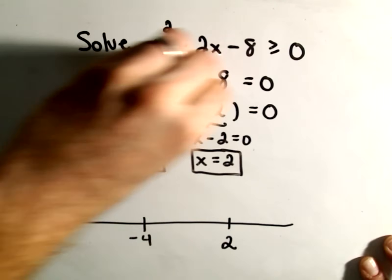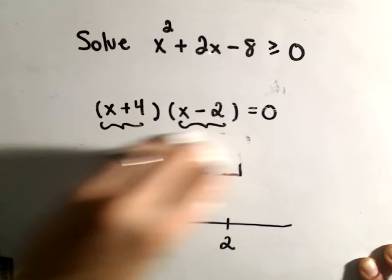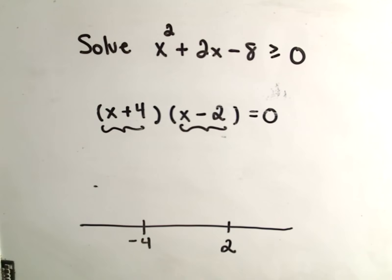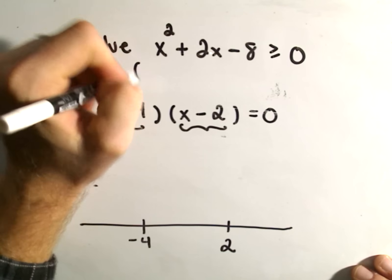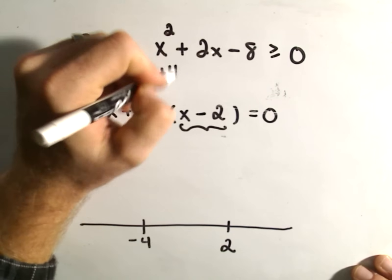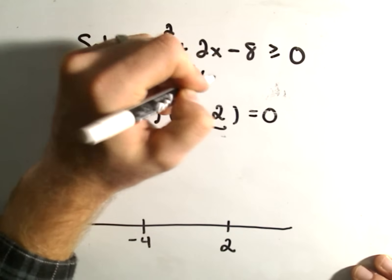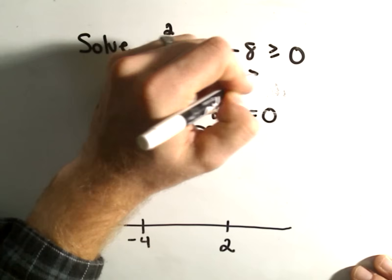So let's look at our inequality. And you could even factor your inequality, which would be the exact same thing. We would have x plus 4, and then x minus 2, greater than or equal to 0.